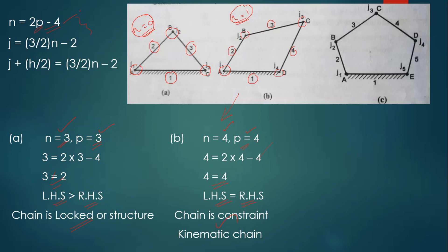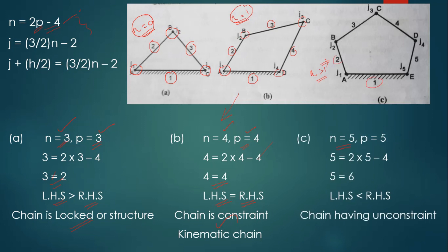Now take the five-bar mechanism, where degree of freedom > 1, so it is unconstrained. Applying Equation 1: n = 5, p = 5 (pairs at A, B, C, D, E). Substituting: LHS = 5, RHS = 2(5) − 4 = 6. Since LHS < RHS, the given kinematic chain is unconstrained, confirming that degree of freedom > 1 for this case.